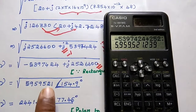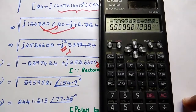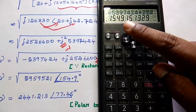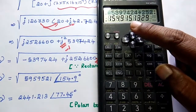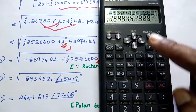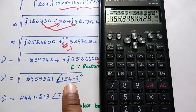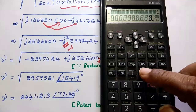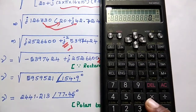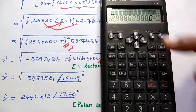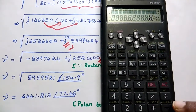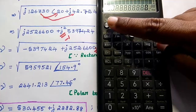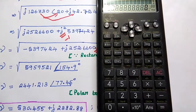We can get only this magnitude value, and we also want the angle. For that, simply press shift and then equal to sign. You can see the angle is 154.91 degrees. So that is the rectangular to polar conversion. Simply select complex mode by pressing 2, type the complex value, press shift plus to convert to polar, press equal for magnitude, and shift equal for the angle.